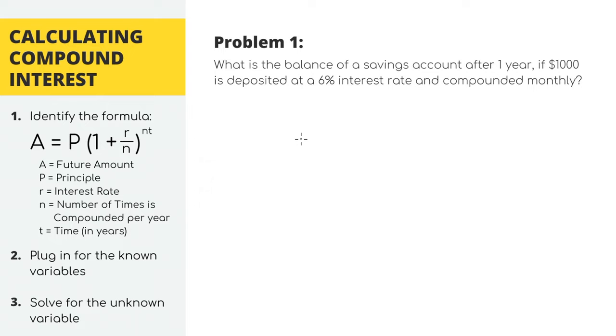If we were to put what we just calculated into a normal problem you might see in class, it would look something like how much money would there be in a savings account after one year if $1,000 is deposited at a 6% interest rate compounded monthly. For compound interest, we have a new formula now where A is the future amount or the total amount of money we're going to have in the account, P is still the principal which is the amount of money we're first putting in, R is still the interest rate in decimal form, but now we have a variable called N where N is the number of times it's compounded per year. And T is still time in years.